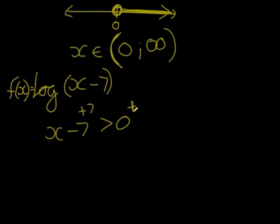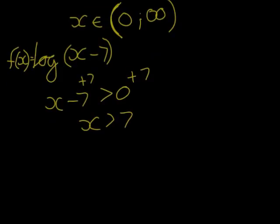I solve for x, so I add a 7 on both sides, and I find that x is larger than 7. If I write that in, let's say normal, just as an expression, I would just say x is an element of the real numbers, but x is larger than 7.